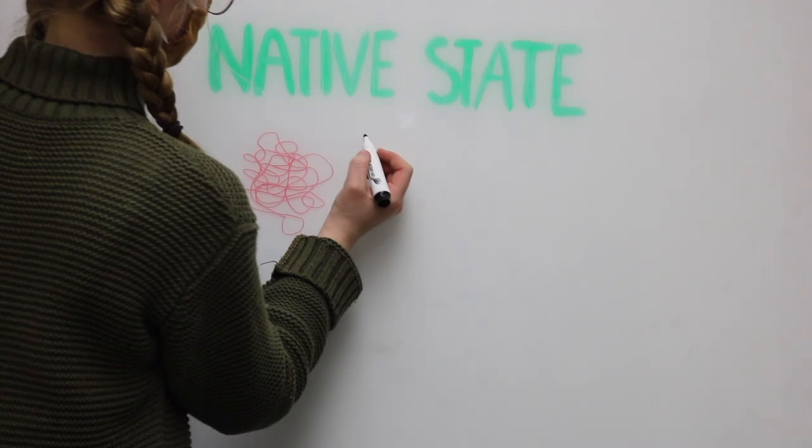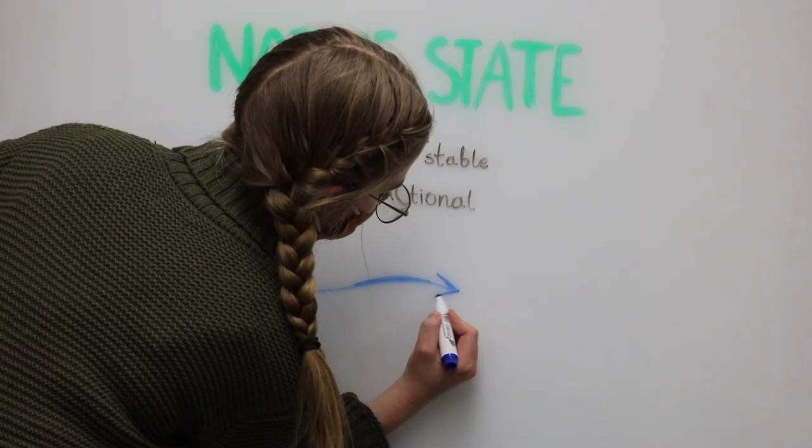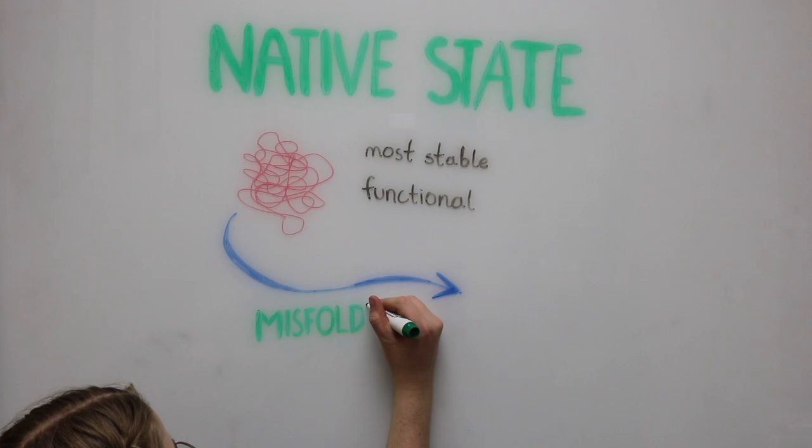Each protein has a native state, or native conformation, which is the most stable arrangement of the molecule where it is folded correctly and able to carry out its function.